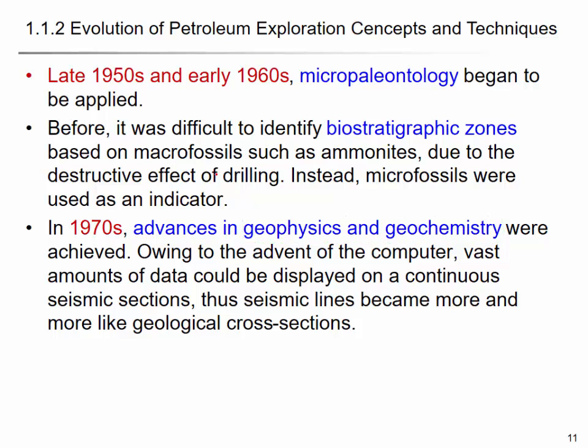In the 1970s, advances in geophysics and geochemistry allowed large amounts of data to be displayed on computers, and geologists interpreted seismic data to find structural anomalies. Geophysicists go out, detonate dynamite, and collect elastic wave data or electromagnetic wave data or conduct a magnetic survey. They display the data and invite geologists to interpret it for structural anomalies. Geologists identify the point to drill, then you hire a driller for that location, and if you're lucky, you find the oil reservoir.